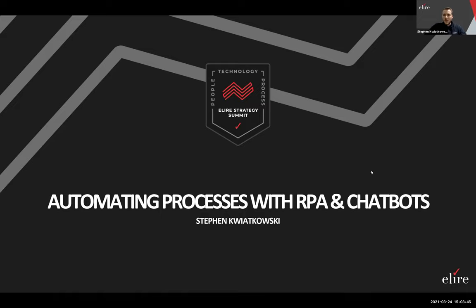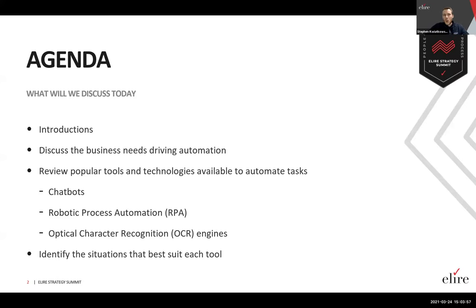Thank you, Jordan. Today we're going to be talking about how to automate some of your business processes using tools like RPA and chatbots. I'll introduce myself briefly, then we'll talk about some of the business needs that really drive automation, and then we'll actually look at three different tools. Chatbots and RPA are going to be the main focus, but I also wanted to touch on OCR engines — optical character recognition — to close the loop and understand how all of these different technologies fit together, and which situations best suit each tool.